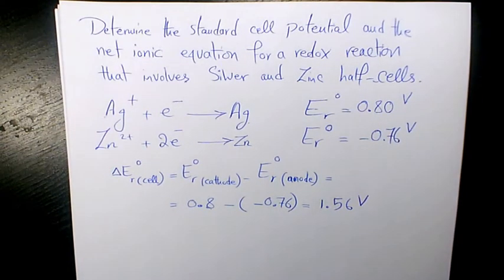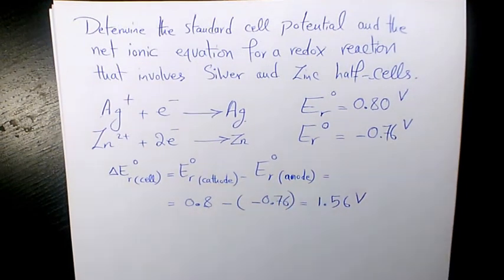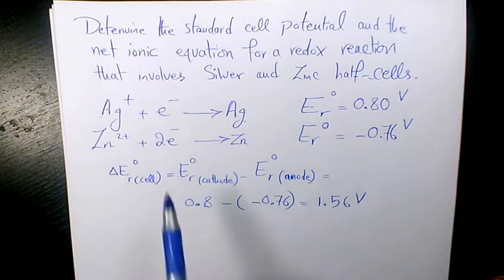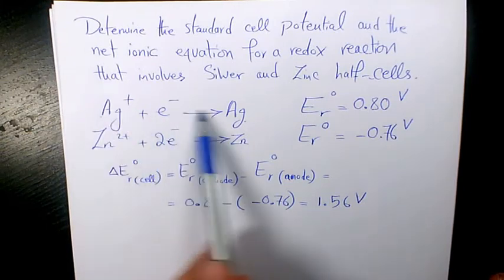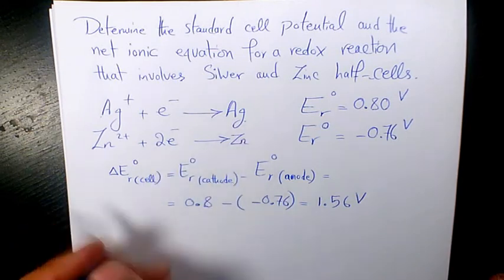So that's going to be the standard cell potential. Now I want to write down the net ionic equation. So as you saw, this one is going to be the reduction and this one is going to be oxidation. So we have Ag, we have Zn.